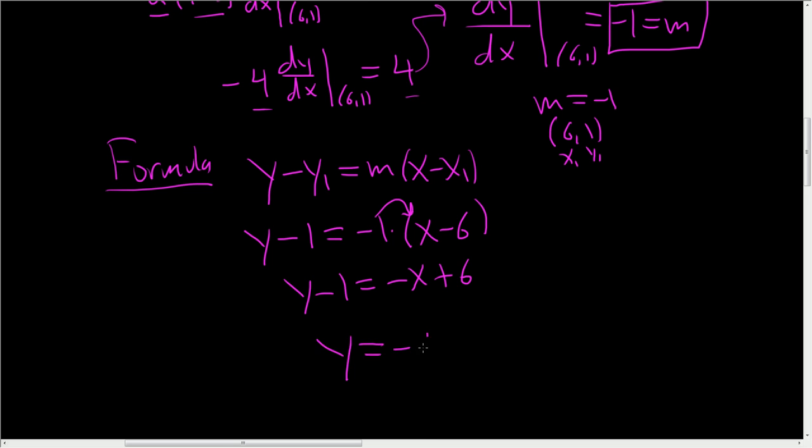so you get y equals negative x plus 7, right? Because if you add 1, 6 plus 1 is 7. Yeah, looks all right. And that's it. That's how you find the equation of a tangent line using implicit differentiation.